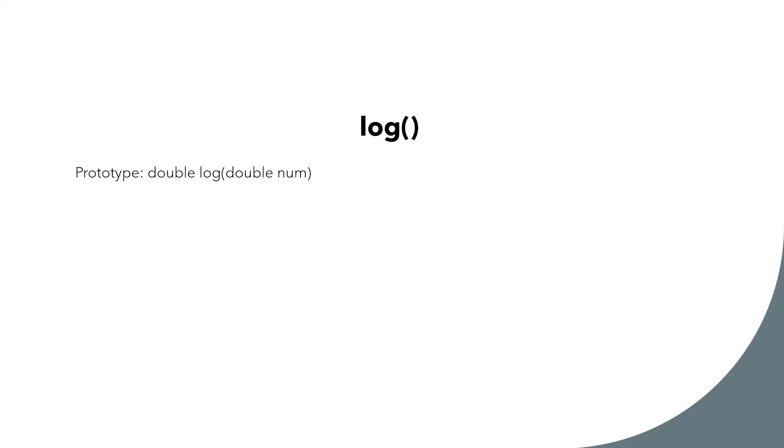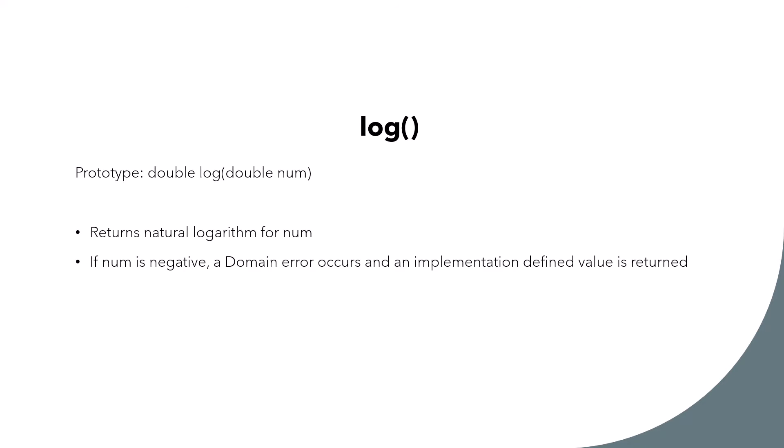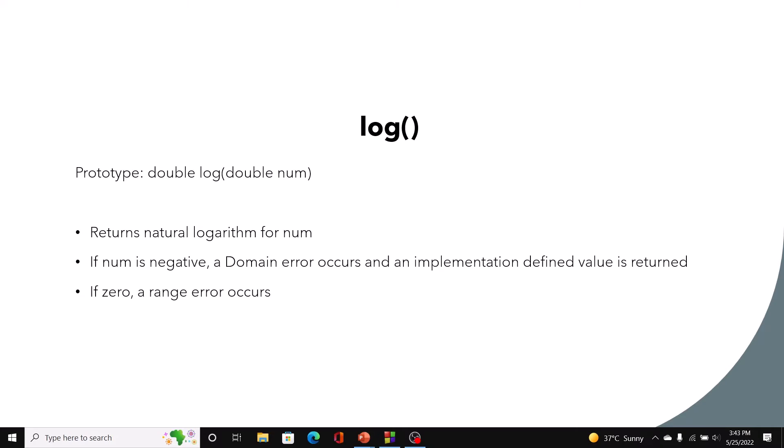Next we have the log function — again returning a double and taking a double as argument. It returns the natural logarithm for the argument number. If the number is negative, a domain error will occur, but it returns an implementation-defined value rather than necessarily EDOM. If the argument is 0, a range error occurs.